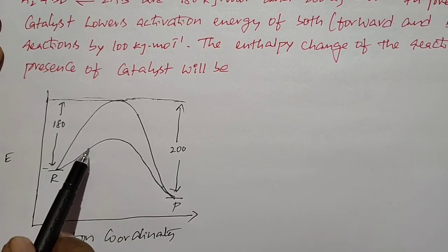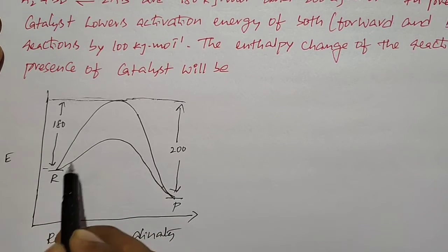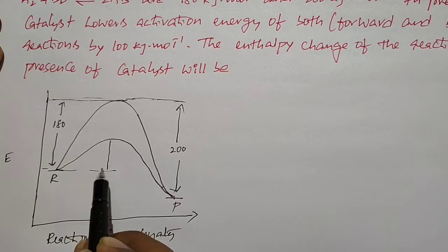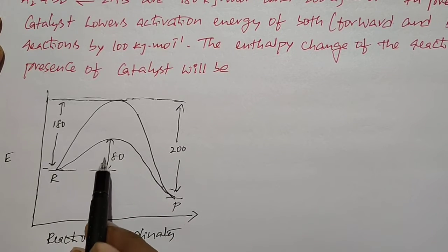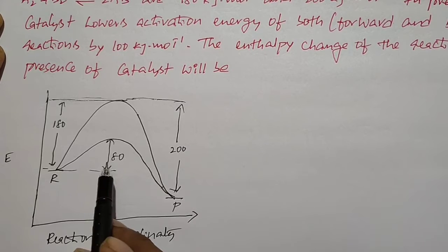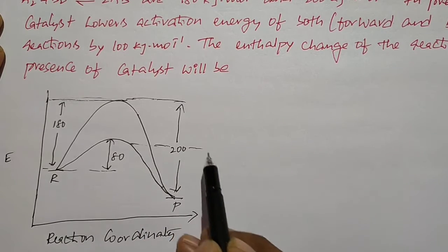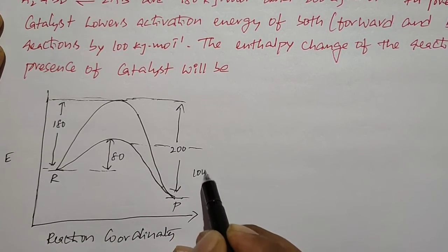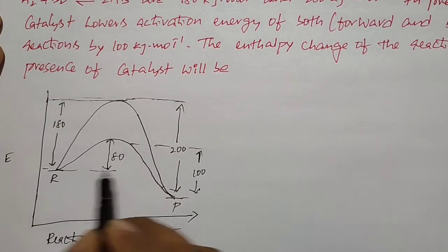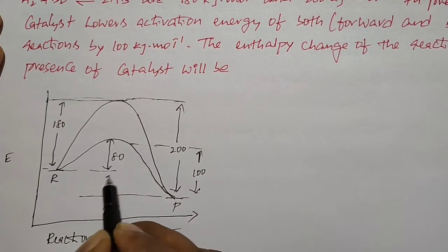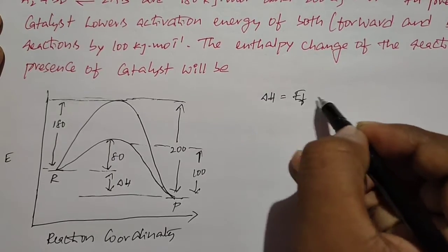In the presence of catalyst, the activation energy of both forward and backward reactions is decreased by 100 kilojoules per mole. So with catalyst, the activation energy for the forward reaction is 80 kilojoules, and the activation energy for the backward reaction in the presence of catalyst is 100 kilojoules. They are asking about the ΔH value, so the formula is ΔH = Ef − Eb.